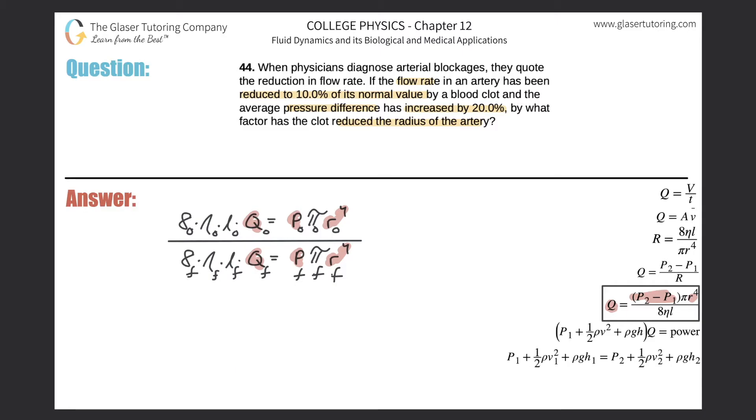Now if I do that and create a simple proportion, what do I realize happens? Certain things cancel. These go bye-bye, these go bye-bye, these go bye-bye, because they're not changing. The pi's go bye-bye. And now I have a simple ratio.